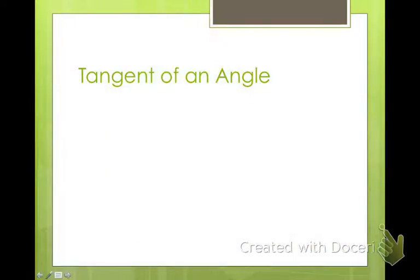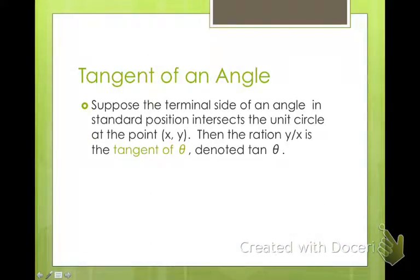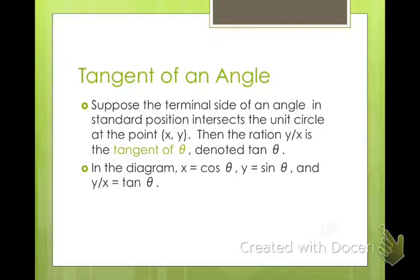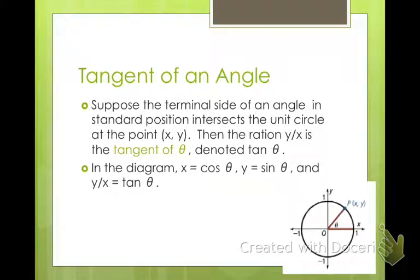Hopefully you remember from geometry what tangent is. Suppose the terminal side of an angle in standard position intersects the unit circle at the point (x,y). Then the ratio y over x is the tangent of θ, denoted tan θ. So in the diagram we have cosine θ and sine θ as the points x and y. So tangent is x divided by y.